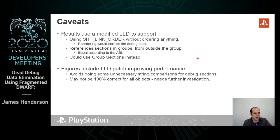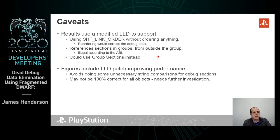There are some caveats as well. We have used SHF_LINK_ORDER in our script; however, in practice this isn't actually going to work because it requires too many LLD patches and it's problematic with respect to the ABI. We could use group sections to do it instead. The figures also include an LLD patch to improve performance by reducing the amount of string comparisons, and it's not clear that this is correct for all objects — it requires further investigation.